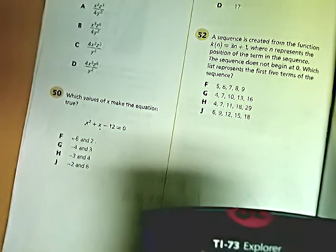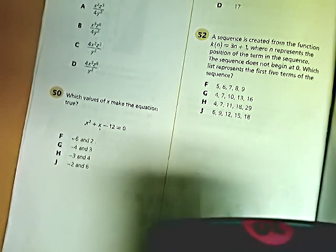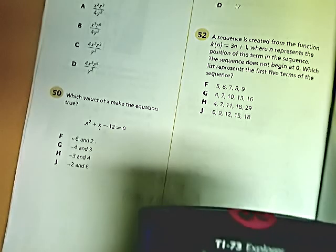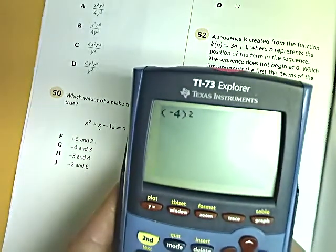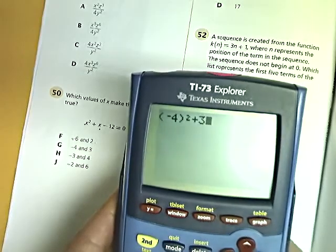Now, the other way you could do it is you can plug it in, which a lot of you might be more comfortable with, and I'm fine with that. But the thing that applies is that you don't type in negative 4 squared and then go in and put 3 in there. That is wrong.